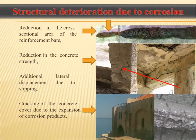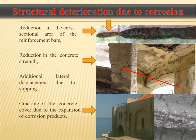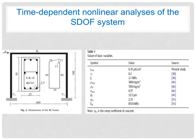It is believed that performance assessment and effects of corrosion must be integrated with each other, especially as a function of time. Because of the different effects of corrosion, the performance level of the structure decreases as a function of time. As shown in these figures, these effects could be a reduction in the cross-section area of reinforcement bars, reduction in the concrete strength, and additional lateral displacement due to slipping and cracking of the concrete cover due to the expansion of corrosion products.